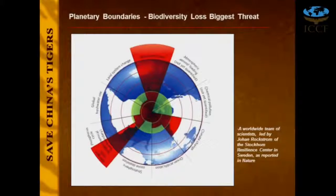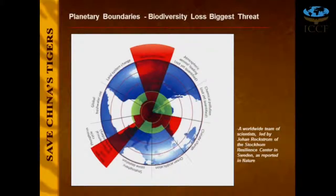This slide is from a group of scientists at the Stockholm Resilience Center. The planet has certain boundaries, and once we surpass them, we may have reached a point of no return — we may not be able to save certain species or reverse damage. In the case of planetary boundaries we have surpassed, the worst right now is actually biodiversity loss. The background loss of species right now is between 100 to 1,000 times more than normal. And the same thing applies to tigers.